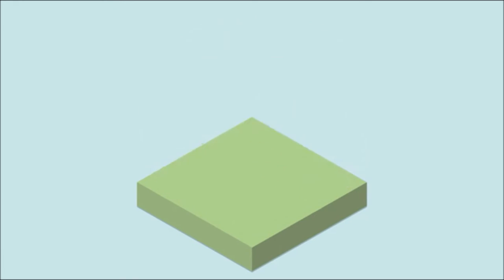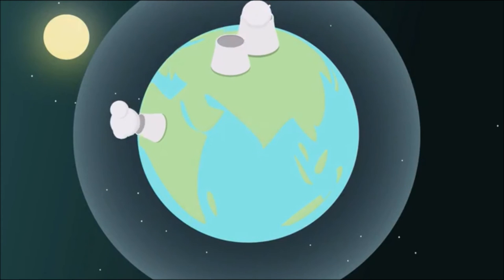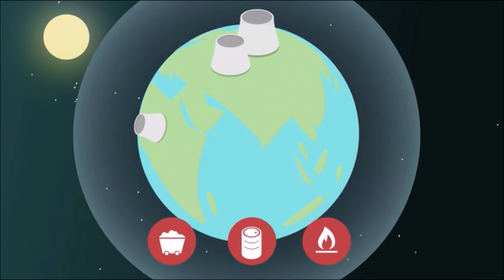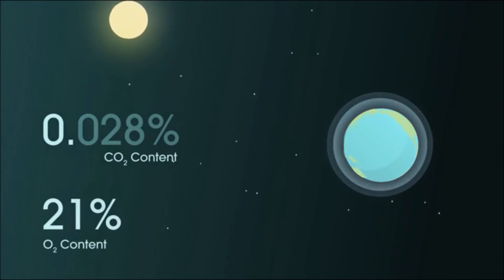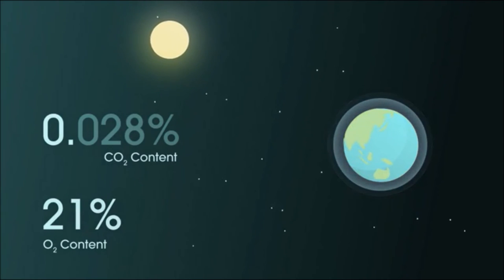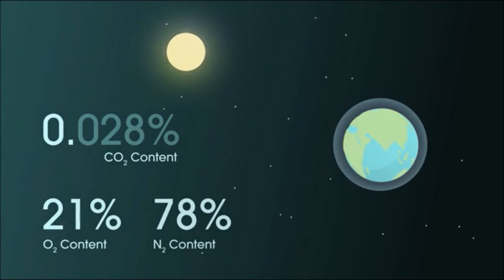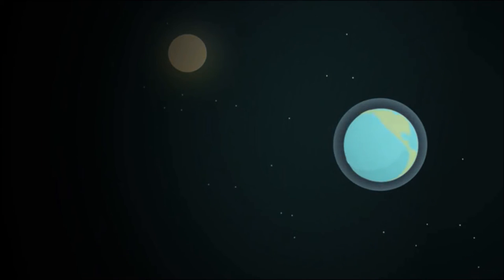Before the world became industrialized by burning fossil fuels such as coal, oil and natural gas, the carbon dioxide concentration in the atmosphere was about 0.028%. Tiny compared with oxygen at 21% and nitrogen at 78% but enough to keep us warm. Without this natural blanket of insulating gas the earth would be too cold to support life as we know it.